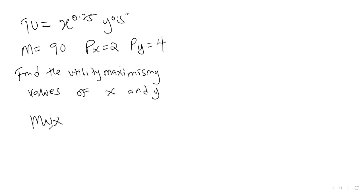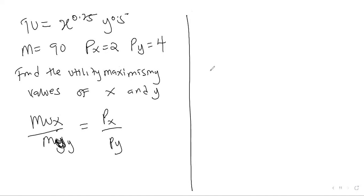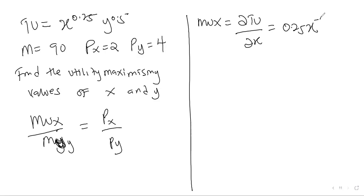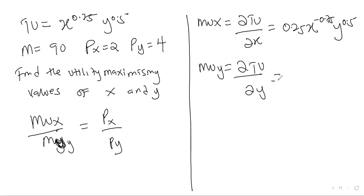Now let's find the utility maximizing values of x and y. The necessary condition is MU of x over MU of y equals Px over Py. We need to get all the elements. MU of x is the partial derivative of total utility with respect to x, which gives us 0.25 x raised to the power negative 0.75 y raised to the power 0.5. Then MU of y is the partial derivative with respect to y, giving us 0.5 x raised to the power 0.25 y raised to the power negative 0.5.